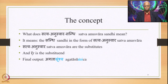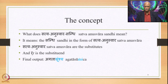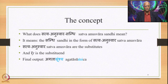What is Sattvanuswara Sandhi? It means the Sandhi in the form of Sattvanuswara, where Sa and Anuswara are the substitutes and R is the substituent. In place of R, Sa and Anuswara come as the output. Although Anunasika together with Sa is also an optional output, it is very rarely seen and therefore not mentioned separately.